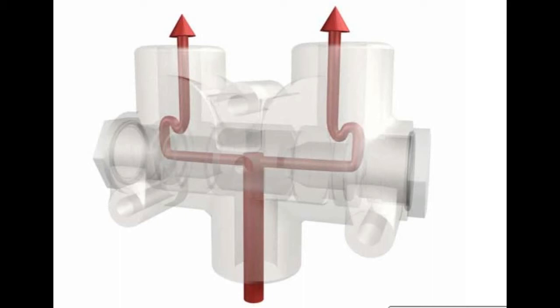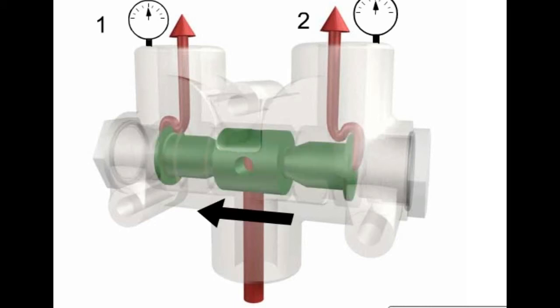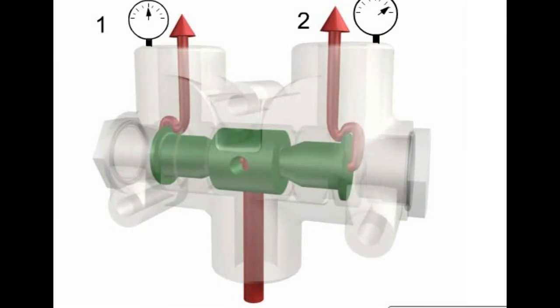Fluid flows around the ends of the spool and out the narrow passages to the outlet ports. If pressure at outlet 2 increases, the spool will shift to the left. The spool moves slightly in response to differences in pressure between the two outlets, resulting in pressure compensation for both outlet ports. This is accompanied by the opening to outlet 1 being partially closed, while the opening to outlet 2 is opened slightly more.